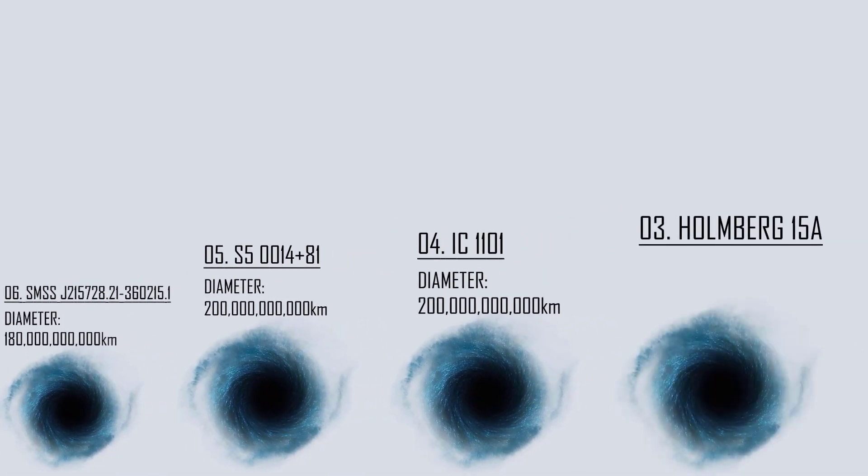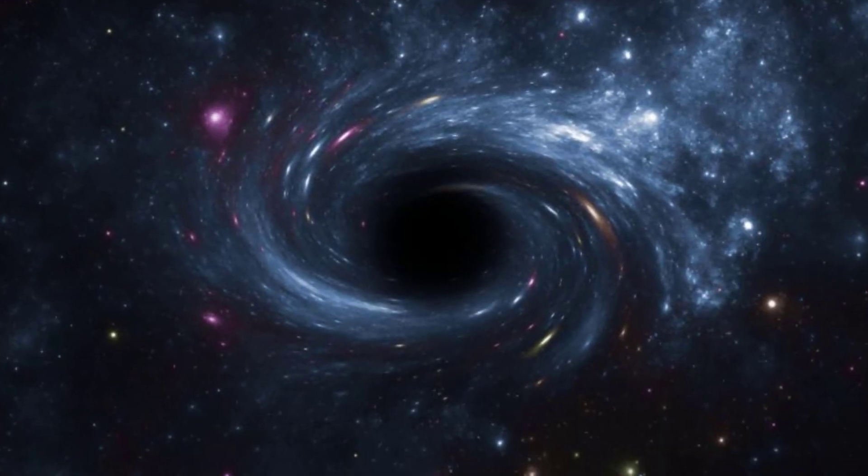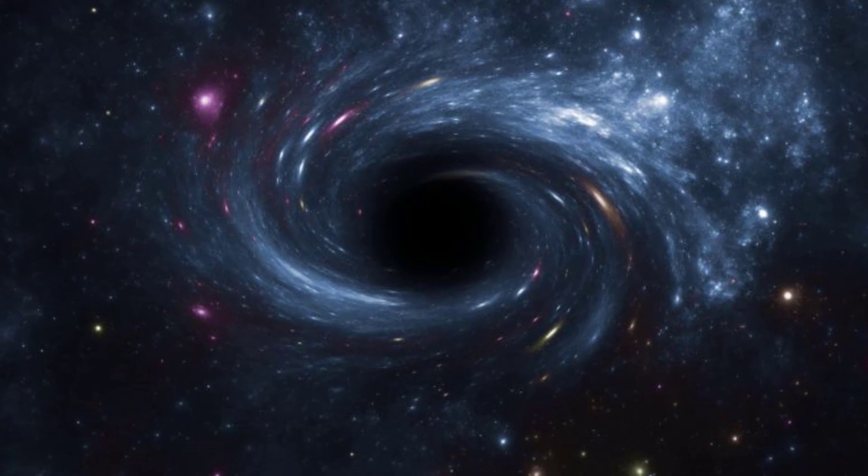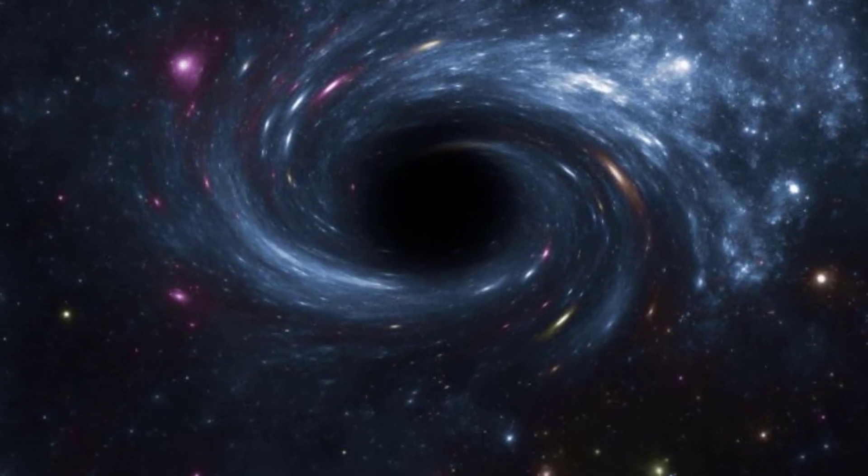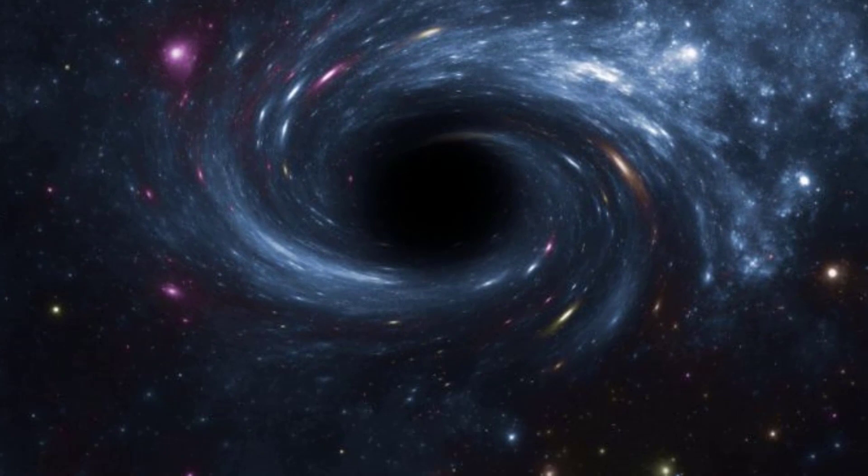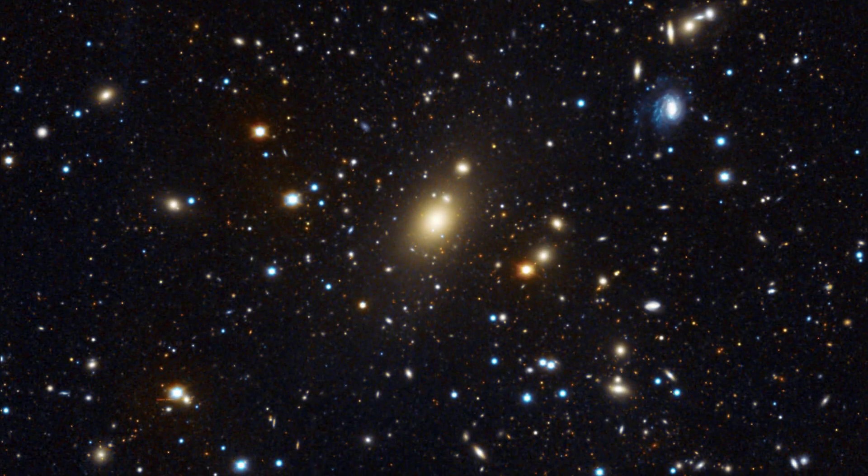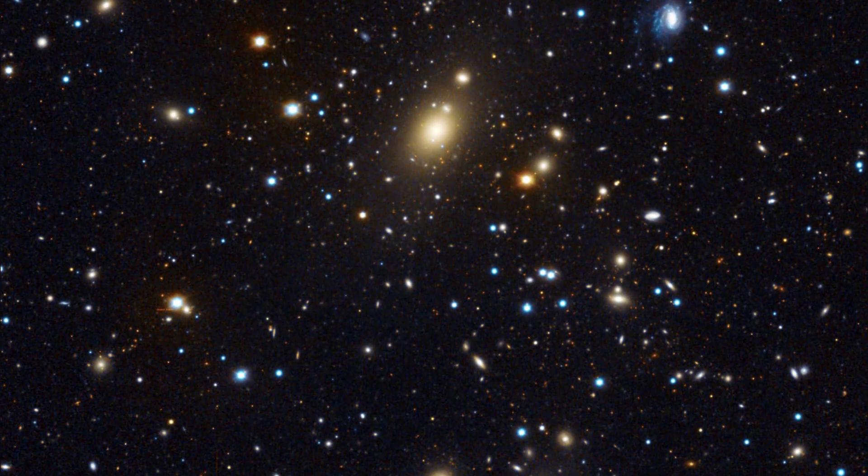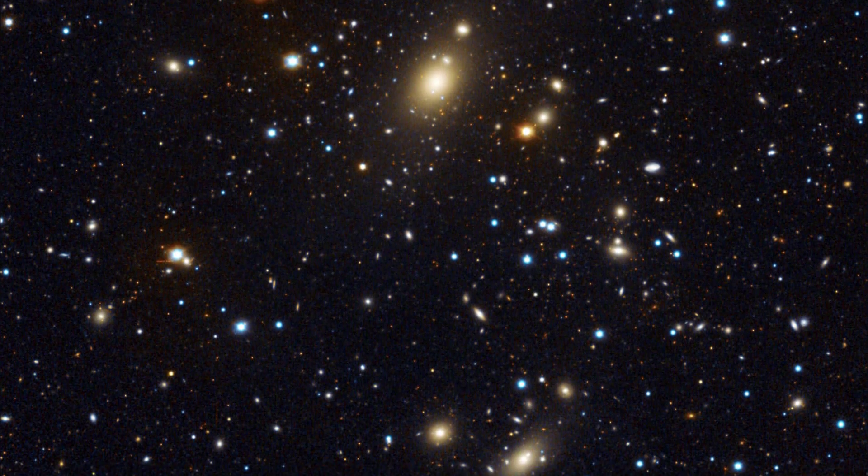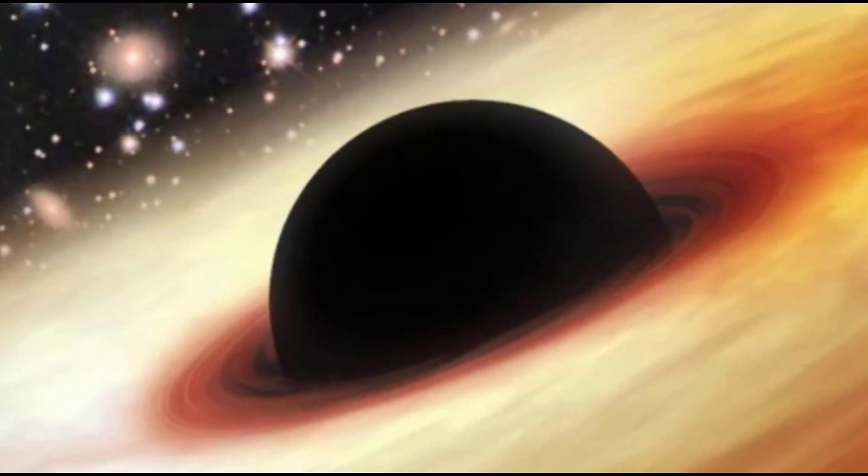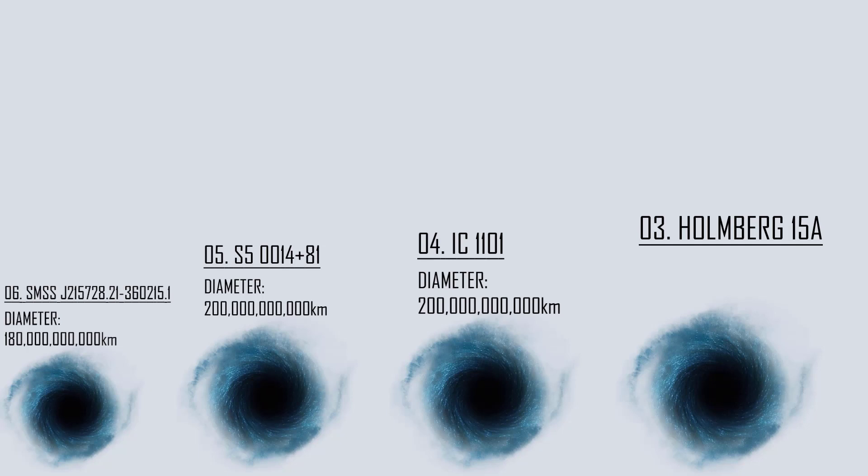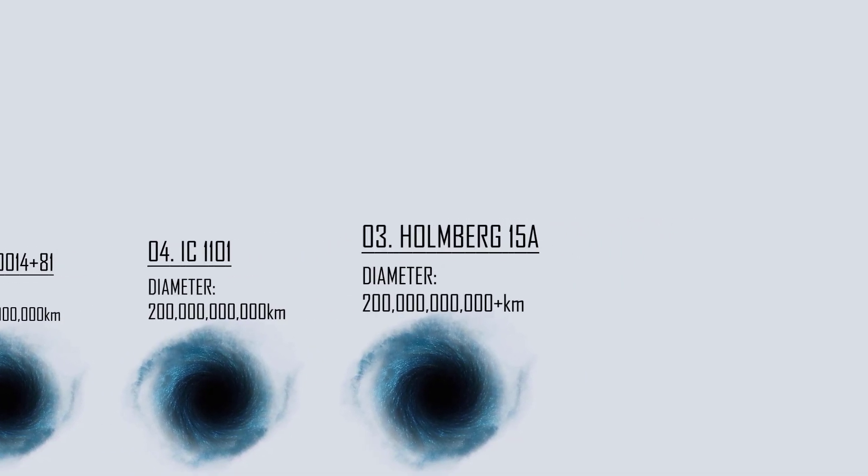Number 3: Holmberg 15A. Astronomers using the ESO's very large telescope discovered an enormous black hole at the center of Holmberg 15A, a supergiant elliptical galaxy and the central dominant member of the galaxy cluster Abel 85. This ultra-massive black hole has a mass of around 40 billion solar masses, putting it at the third spot. Its diameter is yet unspecified but would be around 200 billion kilometers, or 20 times the Pluto's orbits, if compared in relative mass with the others on this list.